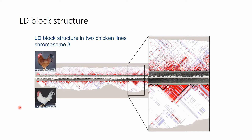It also compares two chicken lines, where we see that the same part of the genome can be very different even within a species when talking about different breeds or different lines. The reason could be that in one chicken breed, this particular part of the genome contains some genes that are very important for that breed.